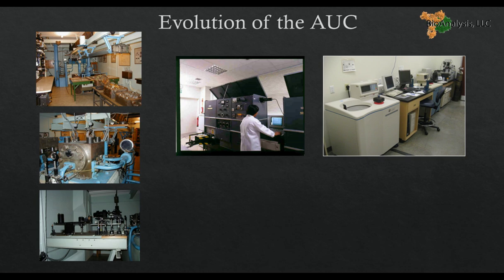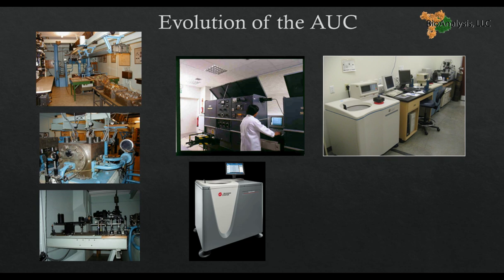Recently, Beckman has pushed out the new Optima AUC, which improves upon the XLA and XLI with improved scanning frequency, better optical systems, faster collection rates, and better cooling systems. This is pushing the boundaries again. With these modern softwares, you can now apply the theory and versatility of AUC to a wide variety of systems — not just biologics, but also nanoparticles and polymers. AUC is the gold standard in measuring size distributions, molecular weights, and hetero- and self-associations.